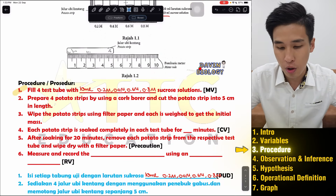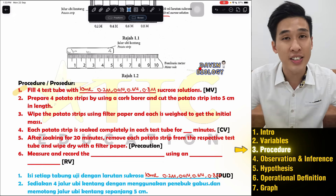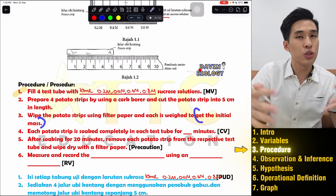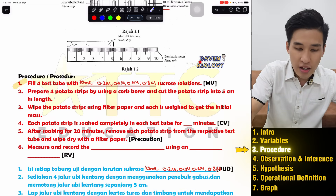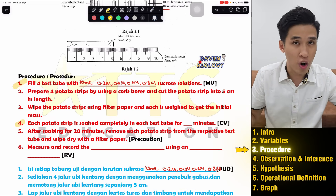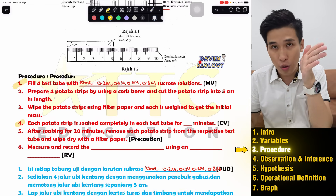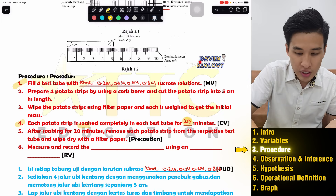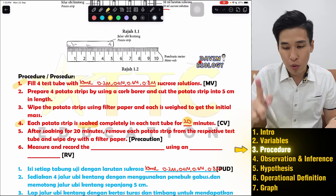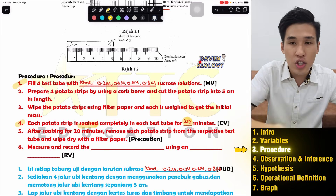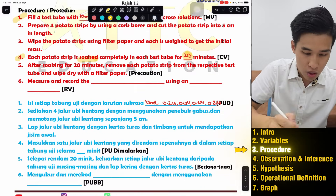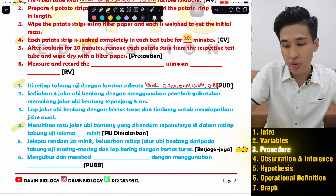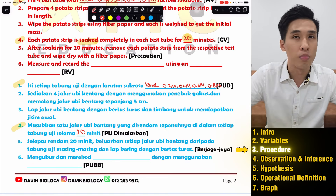Next, prepare four potato strips using a cork borer and cut them into 5 cm strips. Then measure the initial mass. After that — this is where you get your constant variable mark — soak the potato strip for 20 minutes. You must mention the value; if you just say 'I soak the potato strip' with no time given, no marks. In BM: masukkan satu jalur ubi kentang yang direndam sepenuhnya di setiap tabung uji selama dua puluh minit.